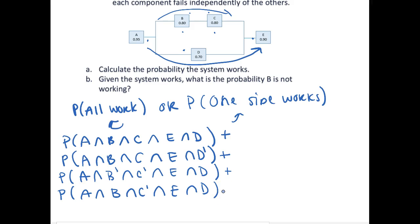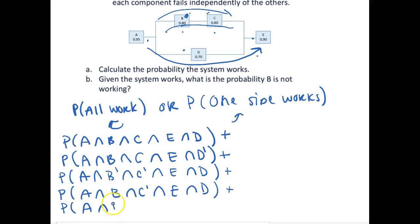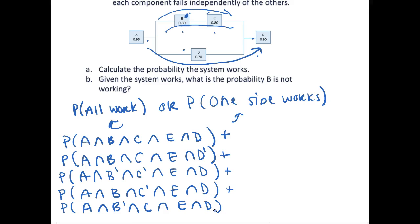This could also be the case where B isn't working but C is. Because B is the weak link, this side is completely defective and isn't working, but the other side is, so the whole system still works. So this is equal to A and B not working and C and E and D. Those are all the events that are possible in this scenario.